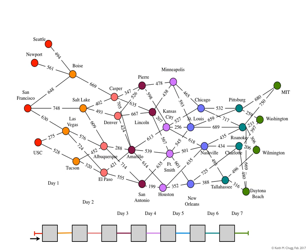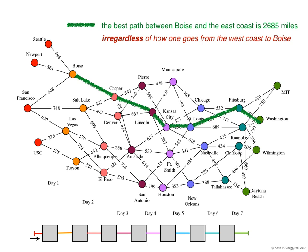The way to think about it is to first condition on one potential city. Let's focus on Boise. If I hypothesize that the best way to go from the west coast to the east coast goes through Boise, then I can break this shortest path problem into two segments: a segment to the left of Boise and a segment to the right of Boise. I happen to know that the shortest path from Boise to the east coast is the one colored by this green crayon — it goes Casper, Lincoln, Kansas City, St. Louis, Pittsburgh, Washington, and that's 2,685 miles total from Boise to Washington.